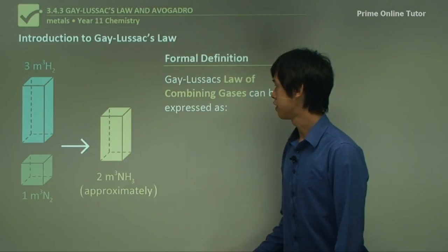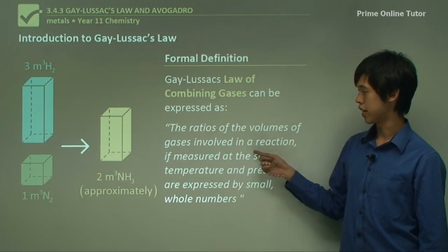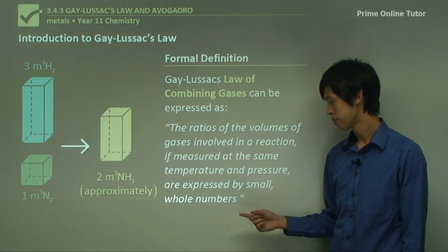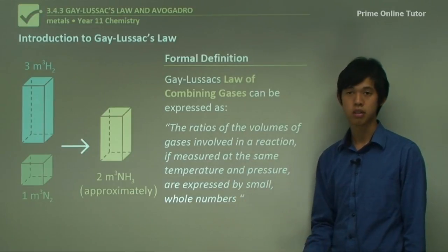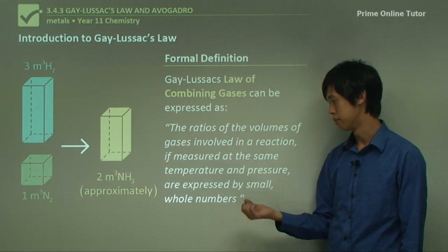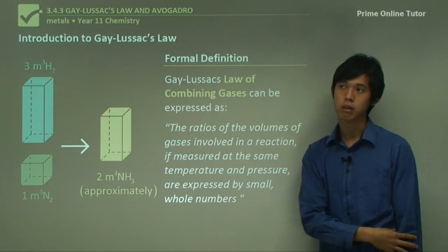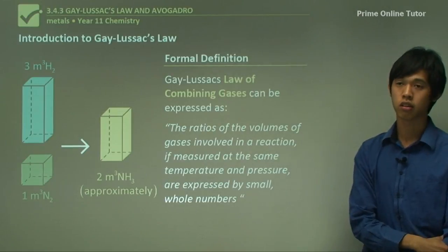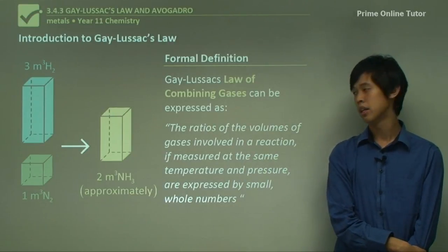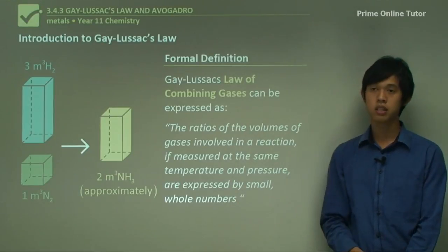So the formal definition of this Gay-Lussac's law of combining gases. The ratios of the volumes of gases involved in a reaction, if measured at the same temperature and pressure, are expressed by small whole numbers. So the ratio of the volumes required is always expressed as a small whole number. And if you think about it, while I often say that you don't need whole numbers in chemical equations, most of the time chemical equations have whole numbers as the coefficients. So this kind of works out.